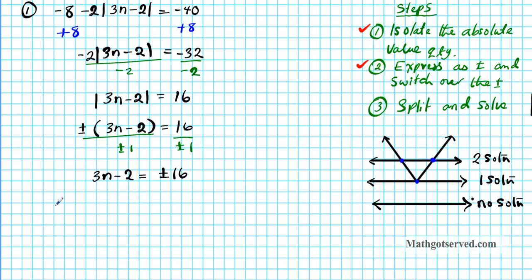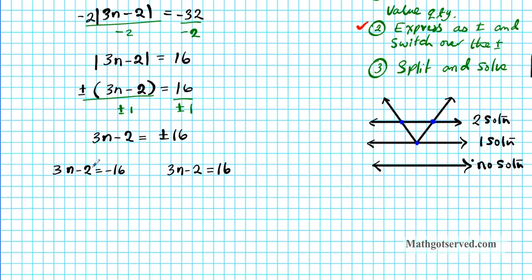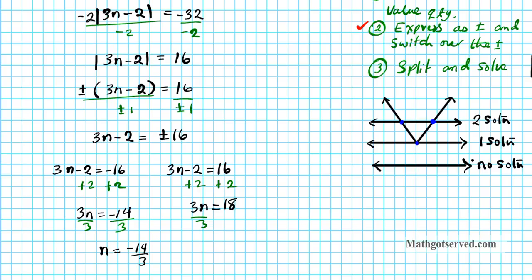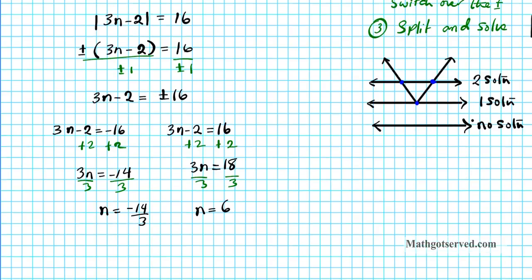We split into two equations: 3n minus 2 equals negative 16, and 3n minus 2 equals positive 16. For the first equation, add 2 to both sides to get 3n equals negative 14, then divide by 3, giving n equals negative 14 over 3. For the second equation, add 2 to get 3n equals 18, then divide by 3, giving n equals 6. So our solution set is n equals negative 14 over 3 and n equals 6.